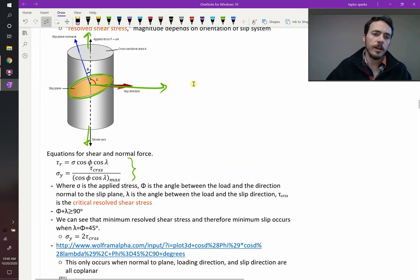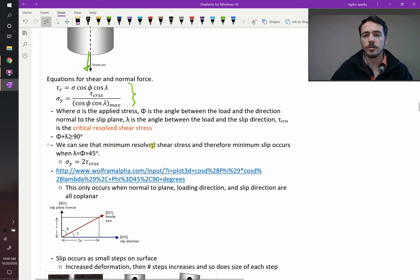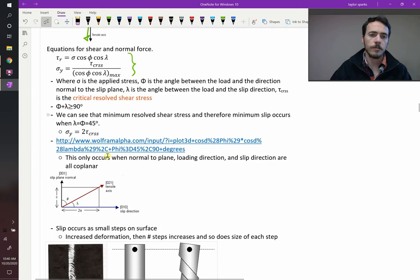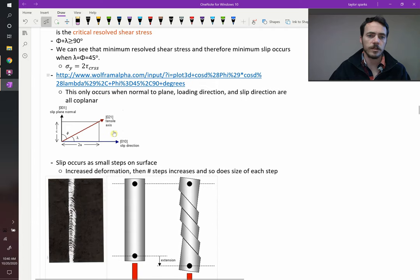Now we know that phi and lambda, at their largest can be equal to 90 degrees, and they're typically less than 90 degrees. The minimum resolved shear stress will occur when lambda and phi are both equal to 45 degrees. You can see that mathematically, we're going to skip that for now.